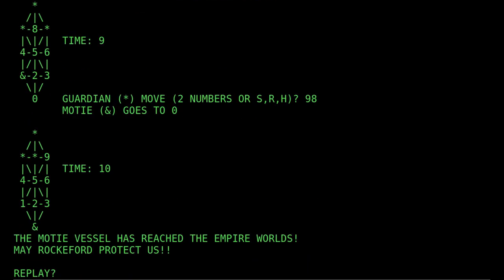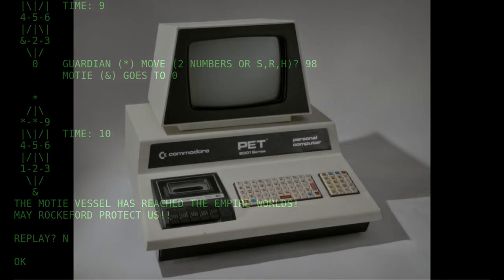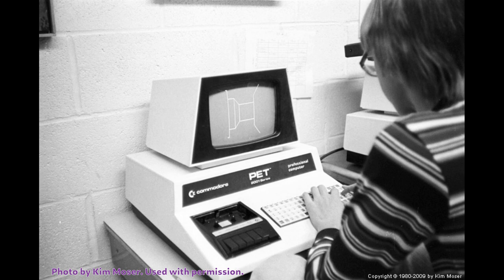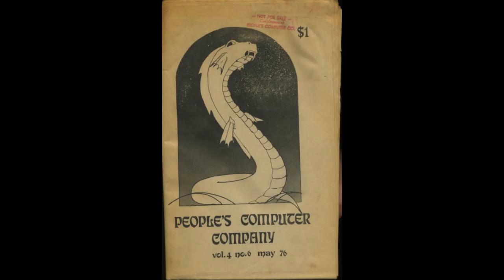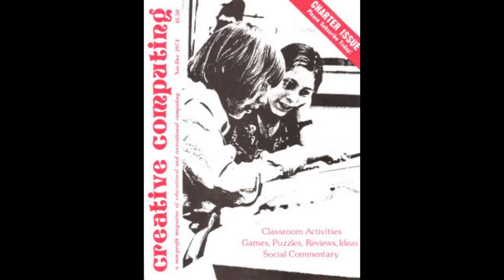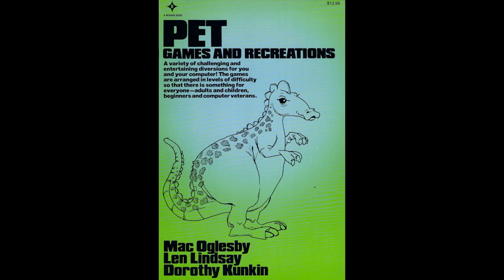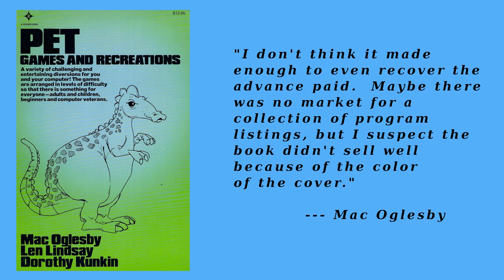Using Dartmouth Basic and then later Commodore Basic once he got a PET 2001, Mack wrote dozens of educational programs suitable for kids. A lot of those appeared in People's Computer Company newspaper, Creative Computing Magazine, Killabod, and a bunch of other publications. He even was a co-author on the book Pet Games and Recreations, published in 1981. Len Lindsay did a large part of the book, Mack said, but the publisher got mad at Len for something and Mack's name went to the top of the author list. The book didn't sell very well, and Mack said: "I don't think it made enough to even recover the advance paid. Maybe there was no market for a collection of program listings. But I suspect the book didn't sell well because of the color of the cover." I think he was right, and I don't think the dinosaur helped either.